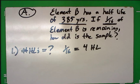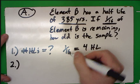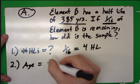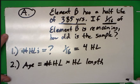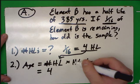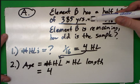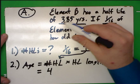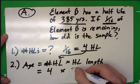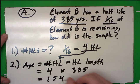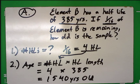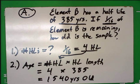Second step: use our equation from class. Age equals the number of half-lives times the half-life length. We plug in four half-lives, and the half-life length from the question is 385 years. So we multiply 4 times 385, and that comes out to 1,540 years old. That's our answer. Pause here if you want to review this problem; otherwise, we'll go on to a B-type problem.